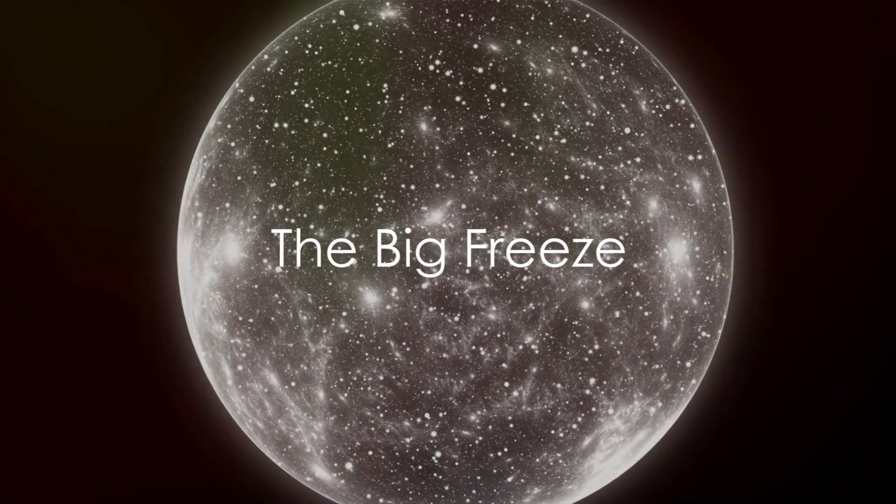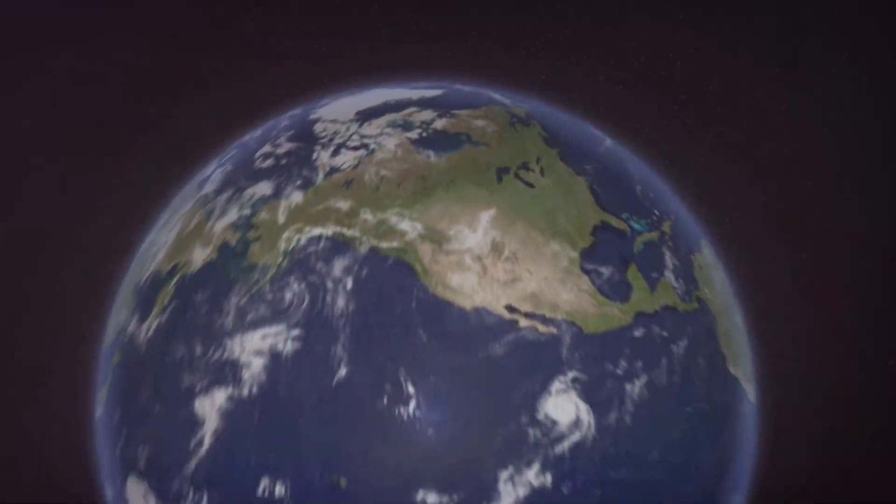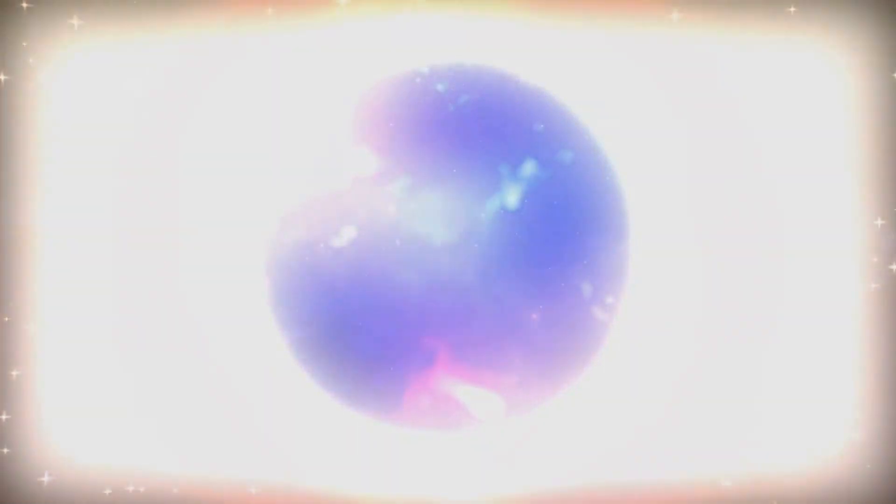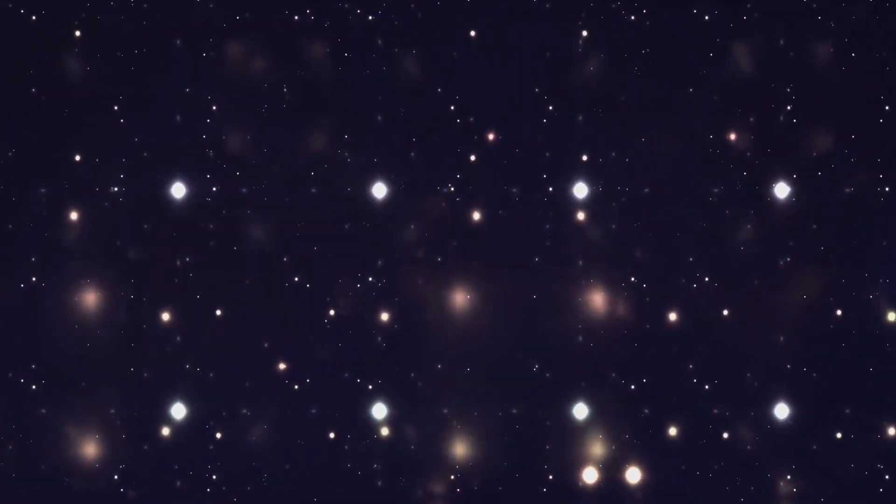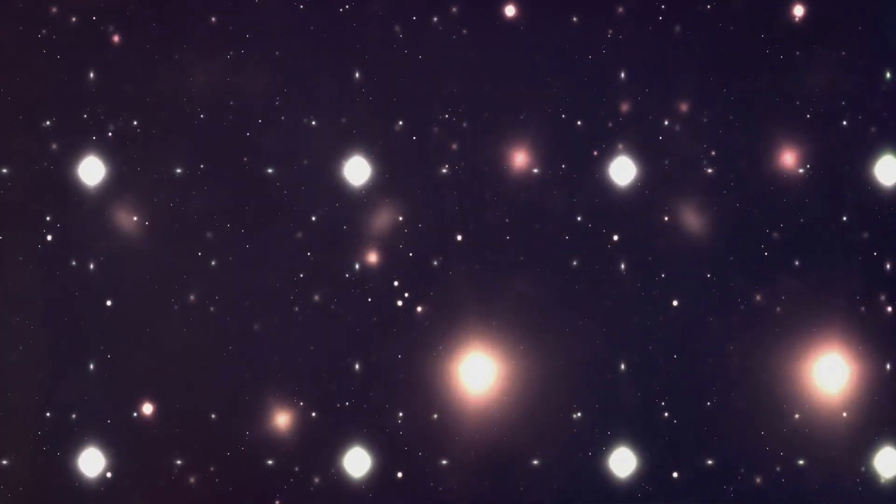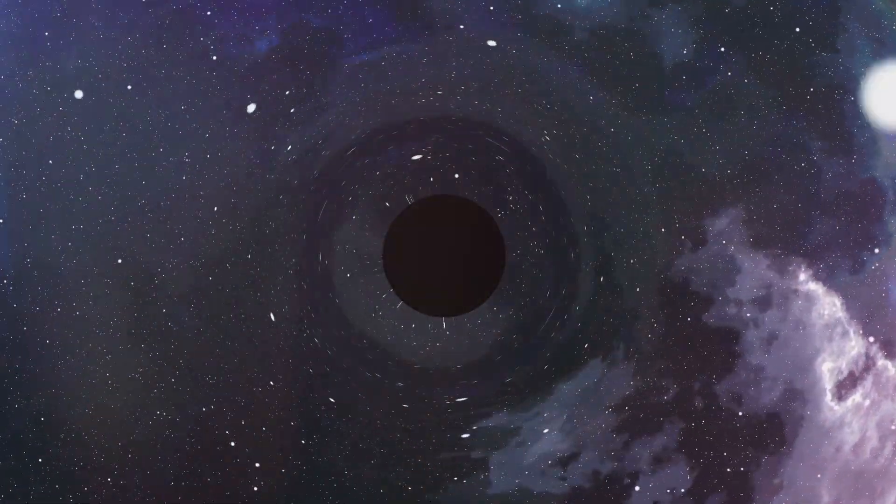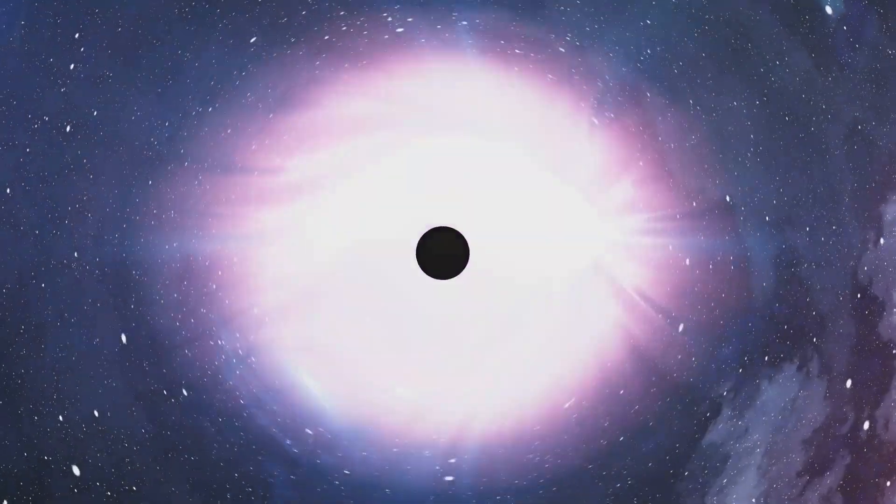But perhaps the universe won't collapse in on itself. Maybe it will keep expanding forever, a scenario known as the Big Freeze. As galaxies move farther apart, star formation will slow down and eventually stop. The universe will become a dark, cold place, populated by black holes and dying stars. Over trillions of years, even these black holes will evaporate, leaving behind a dark, lifeless universe.